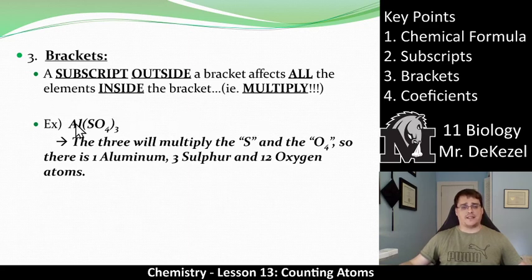We can sometimes have brackets, as in this example right here. When we have brackets, we'll also have a subscript outside the brackets. It affects all the elements that are inside the brackets, which means we need to multiply. We have aluminum outside the brackets, so there's just one of them. But we have S inside the brackets and a three outside, so there's one S multiplied by three, which is three sulfurs. And then four oxygens multiplied by three is 12 oxygen atoms, and we have just the one aluminum because it is not in the brackets.